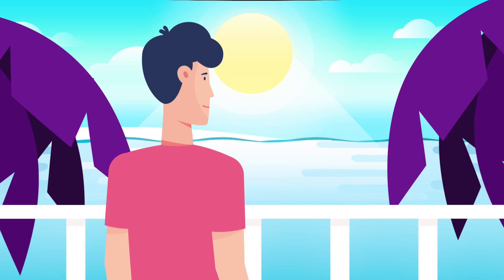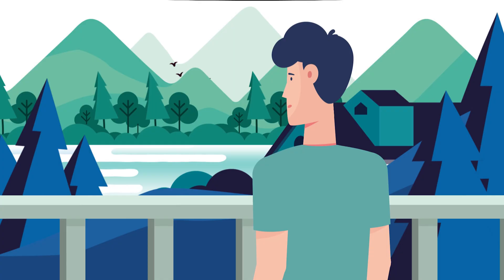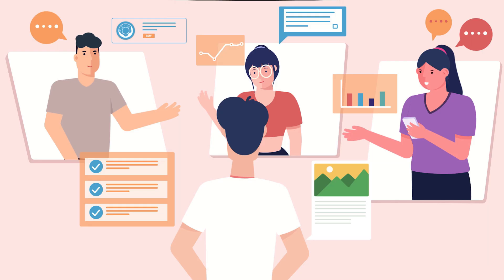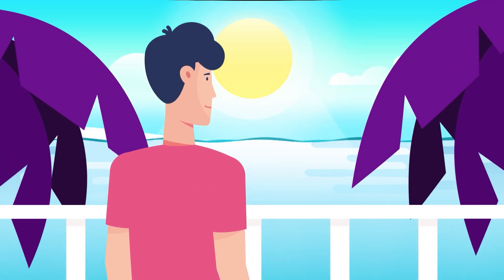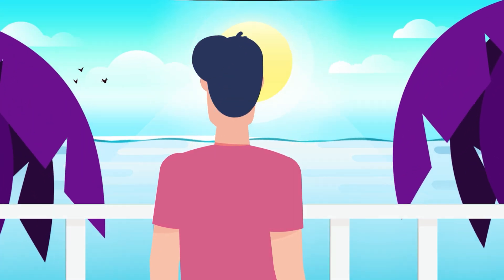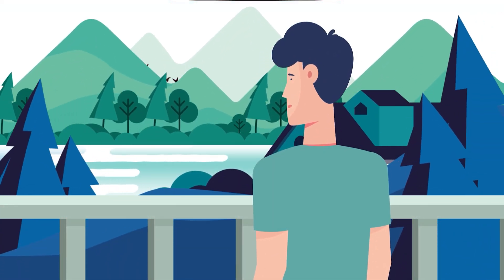The animation starts with the main character appearing on a sea beach, then jumping onto a hilly area, hanging out with friends in a virtual environment, and then the scene zooms out to the real world where the character is wearing a VR headset enjoying the experience. That's the overall idea of this project. Now let's check out the After Effects workflow.